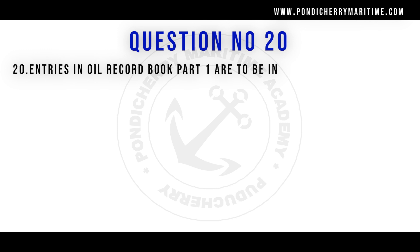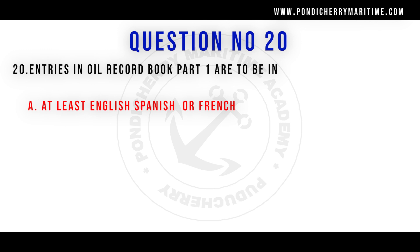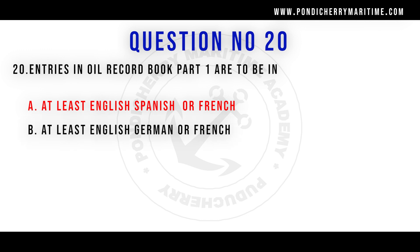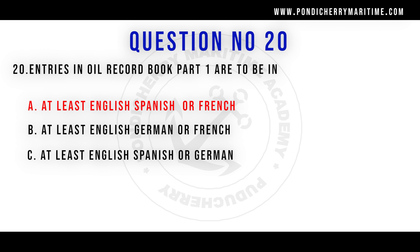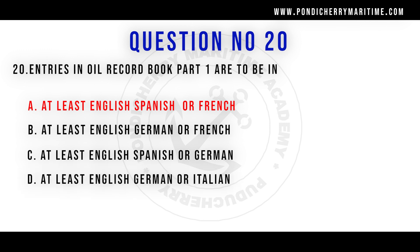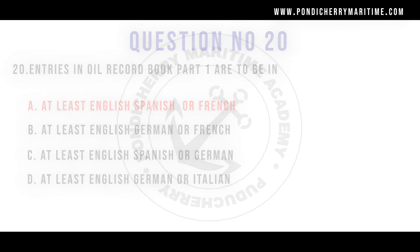Question twenty: Entries in the Oil Record Book Part 1 are to be in: Option A: At least English, Spanish, or French. Option B: English, German, or French. Option C: English, Spanish, or German. Option D: English, German, or Italian. Correct answer is Option A — the official languages English, Spanish, or French.